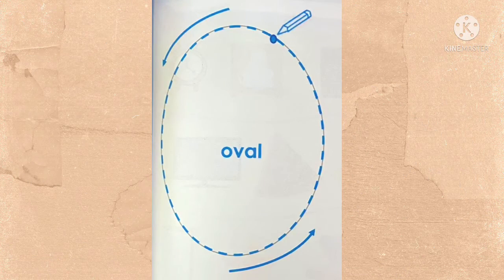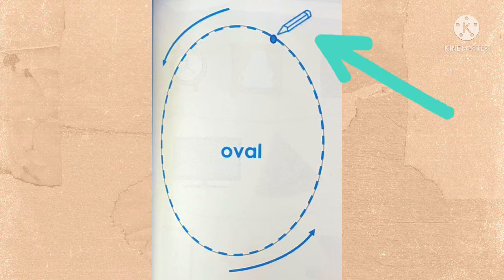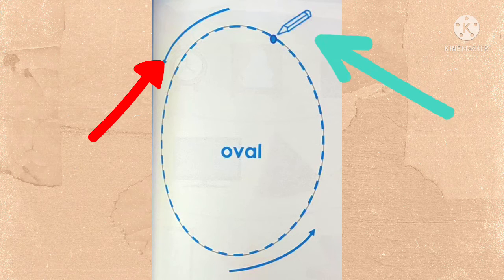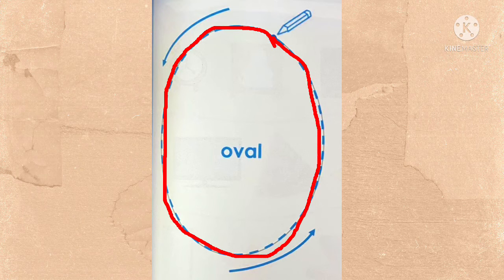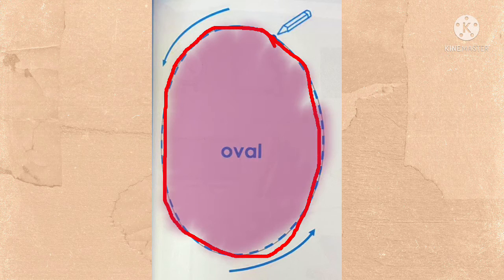Do you see a pencil there? Great. How about an arrow? Do you see an arrow? Good job. Now, this time we're going to trace and make an oval. You just have to trace until you get the end point. After you trace, you color them beautifully. Good luck, kids.